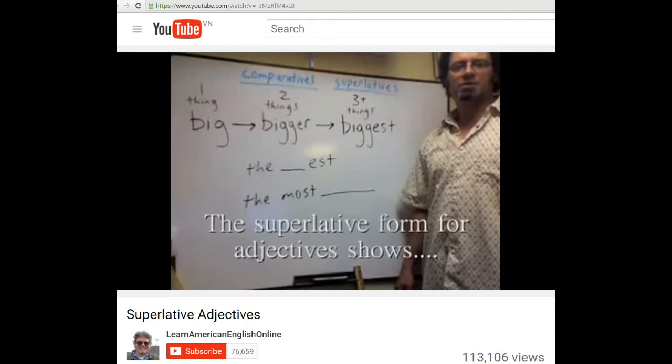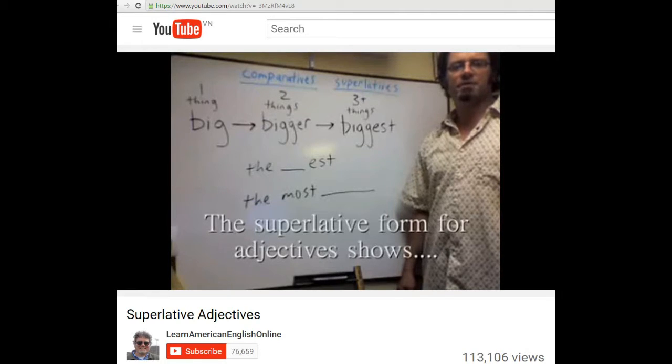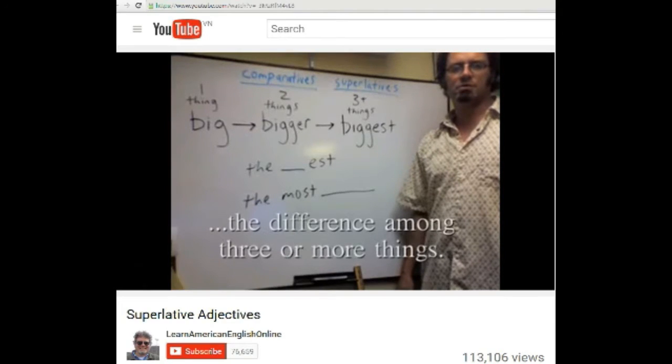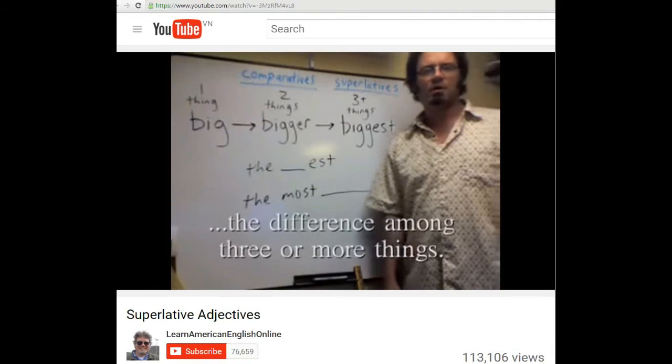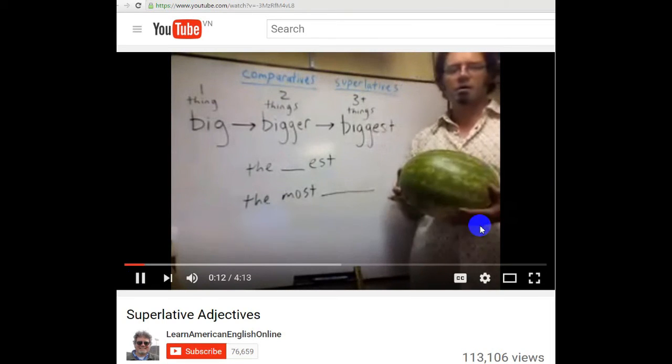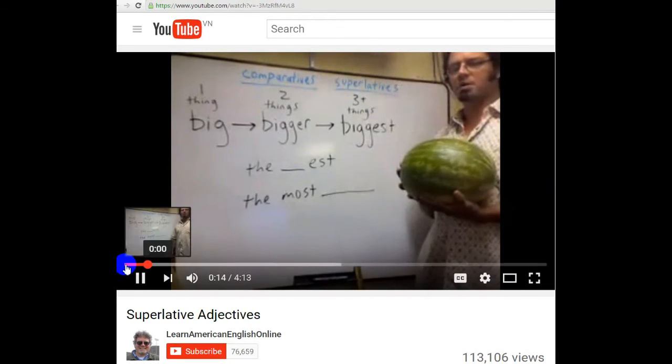The superlative form for adjectives shows the difference among three or more things. For example, if I have a watermelon, I can say the watermelon is big.